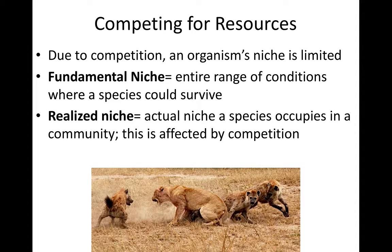Now, in the wild, there is fierce competition for survival, therefore an organism's niche is limited — it's small. There is something known as a fundamental niche, which is the entire range of conditions where a species could potentially survive. But there's the realized niche, which is the actual niche that a species has, and it's smaller than the fundamental niche because a species is competing with other organisms for the same niche. Just understand the terms fundamental niche and realized niche, and that the realized niche is smaller than the fundamental niche.